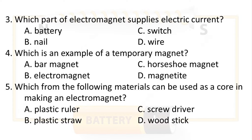Question 5: Which from the following materials can be used as a core in making an electromagnet? A. Plastic ruler. B. Plastic straw. C. Screwdriver. D. Wood stick.